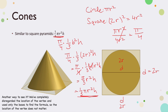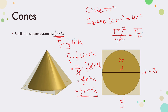So there we have it. We've derived the formula for a cone, and we've derived the formula for a square pyramid and any rectangular pyramid. That's all I have — thank you so much for watching, and I'll see you in another video.